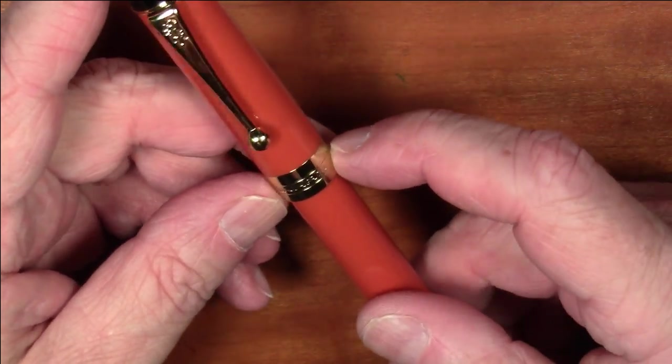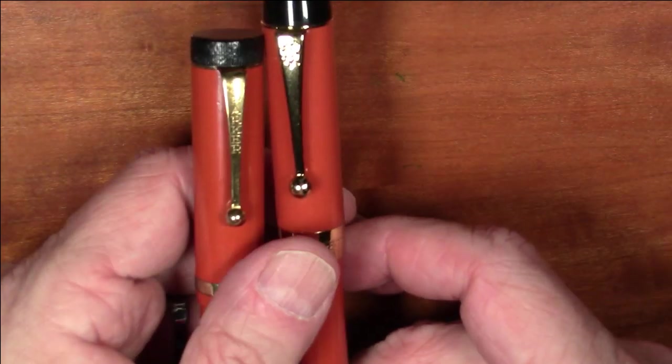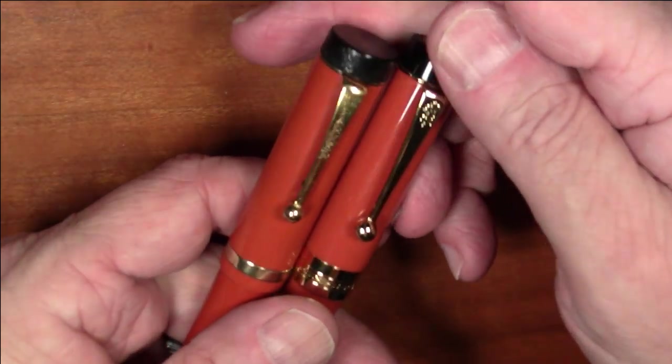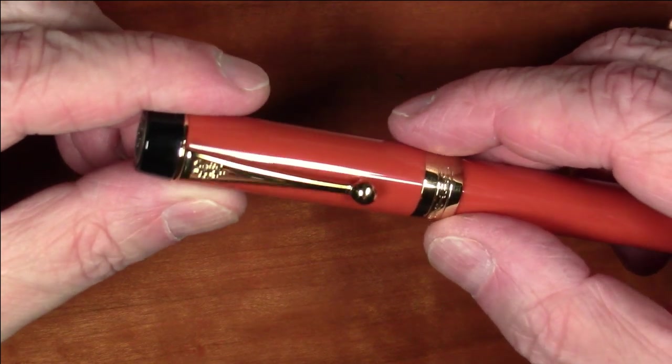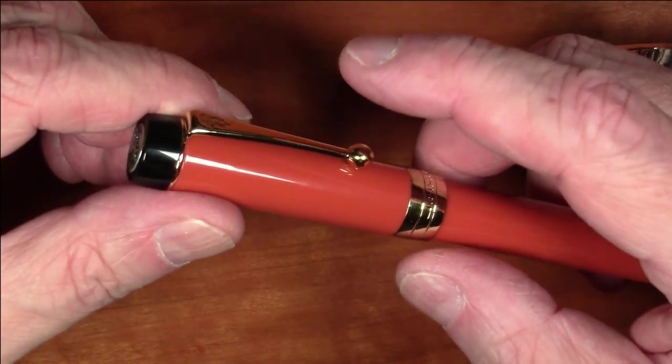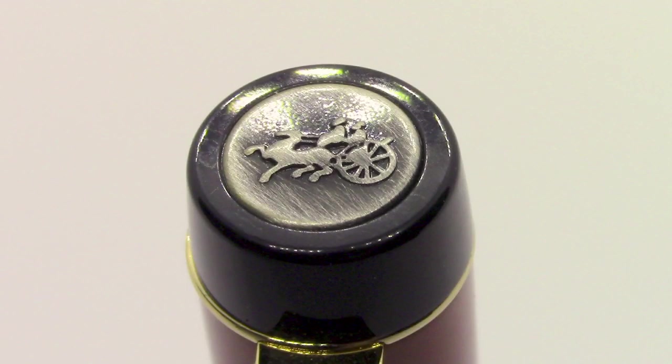It has a pretty wide cap band that just simply says Jinhao on it. It has a clip that very much emulates the clip on the Duofold. It does have a Jinhao logo on it, but it's one of these severe V-shaped clips with a ball at the end that is very nice. If you're familiar at all with, say, a lot of modern Pilot pens, like a Pilot Custom 823, for example, has a very similar clip. We have a finial on the end, which has the Jinhao logo, the Chariot Jinhao logo inset into a bronze disc, which looks really nice.